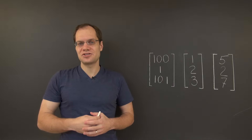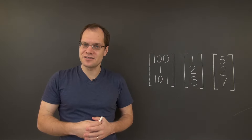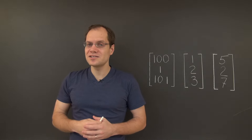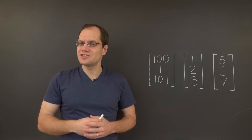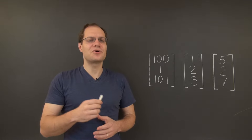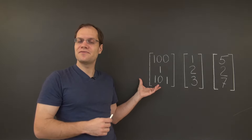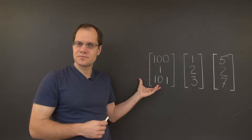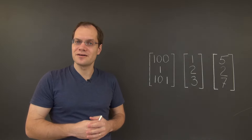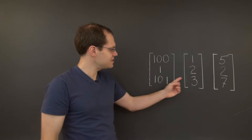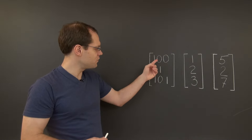We will now answer another interesting question related to the concept of dimension, and I will point out one spot where it's very easy to make a logical mistake. The question is: what is the span of these three vectors? The key observation is that in each of these vectors, the last entry is the sum of the first two.